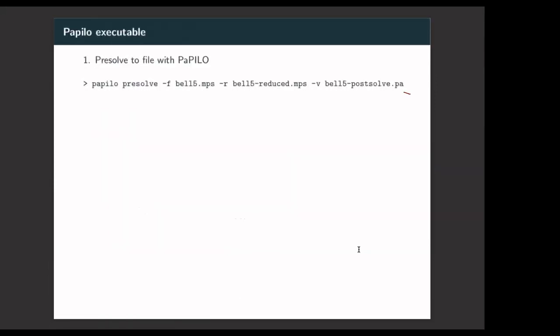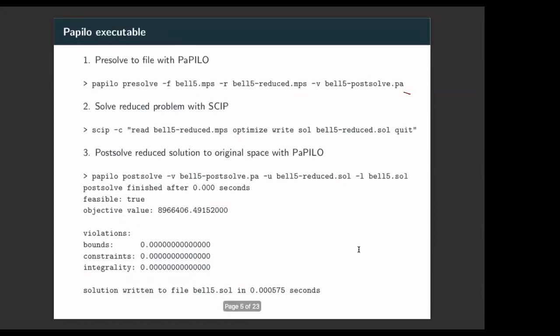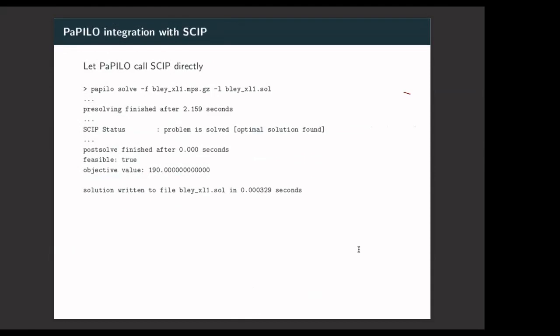For using the executable, we can pre-solve the problem to a file and also store post-solve information on the command line. When we solve the reduced problem, for example with SCIP, and write out the solution, we can subsequently on the command line perform the post-solve operation using the archives that was written out before and produce the solution in the original space.